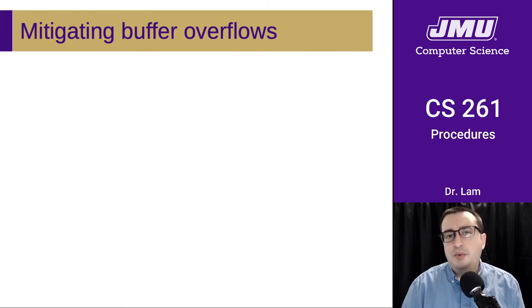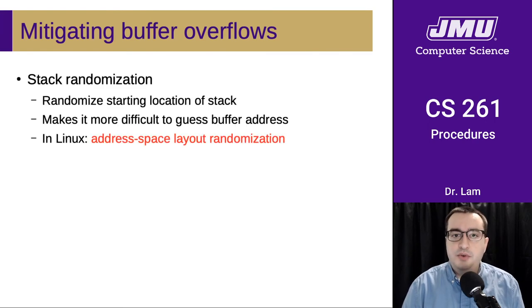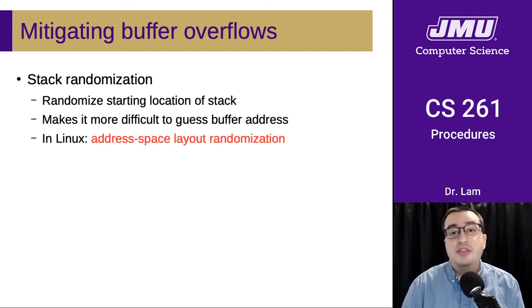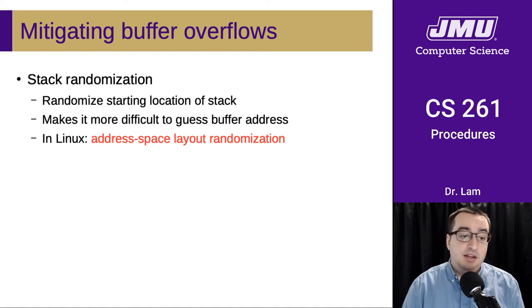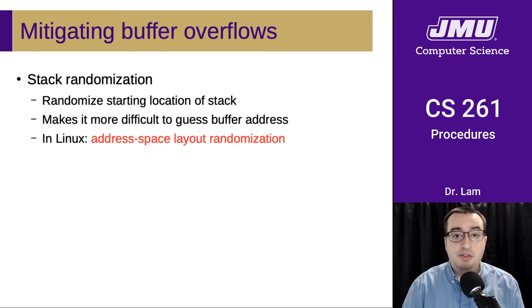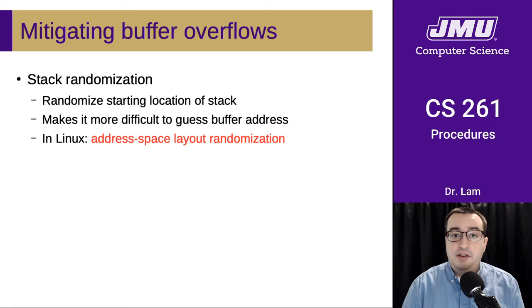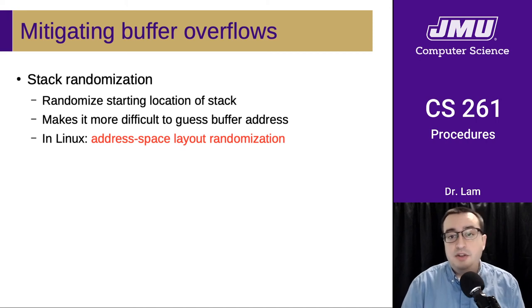So how do we deal with this? There are a couple of ways to mitigate buffer overflows. One popular approach is stack randomization - if you randomize the starting location of your stack, it makes it much more difficult to guess buffer addresses. In Linux, this is almost always turned on by default. It's called ASLR, or address space layout randomization. This is part of why some memory regions are located at random places every time you run, helping mitigate buffer overflow security vulnerabilities.